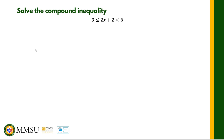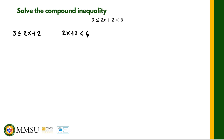So the first inequality is: 3 is less than or equal to 2x plus 2, and the second inequality is: 2x plus 2 is less than 6. We are going to solve these two inequalities separately.